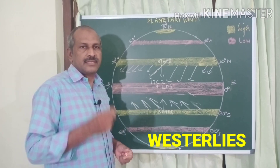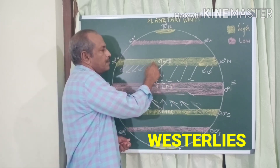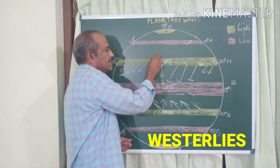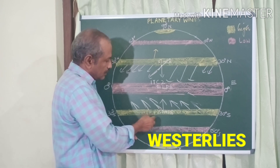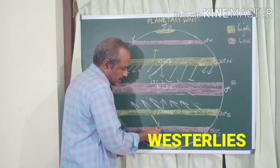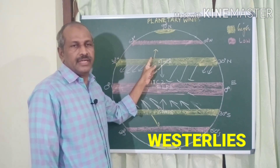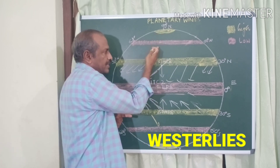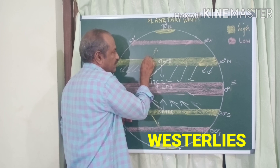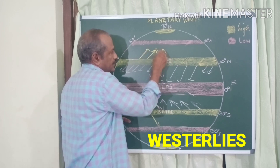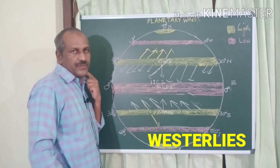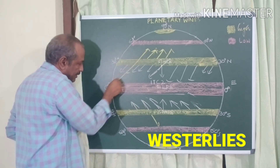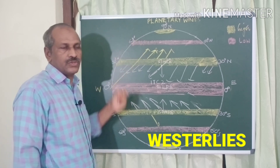Westerlies are the winds blowing continuously from the subtropical high pressure belt to the subpolar low pressure belt. The Coriolis force is very strong here, and as a result the wind is deflected to its right in the northern hemisphere. So the direction of flow is exactly from the west, and this wind is called the westerlies because it blows from the west.